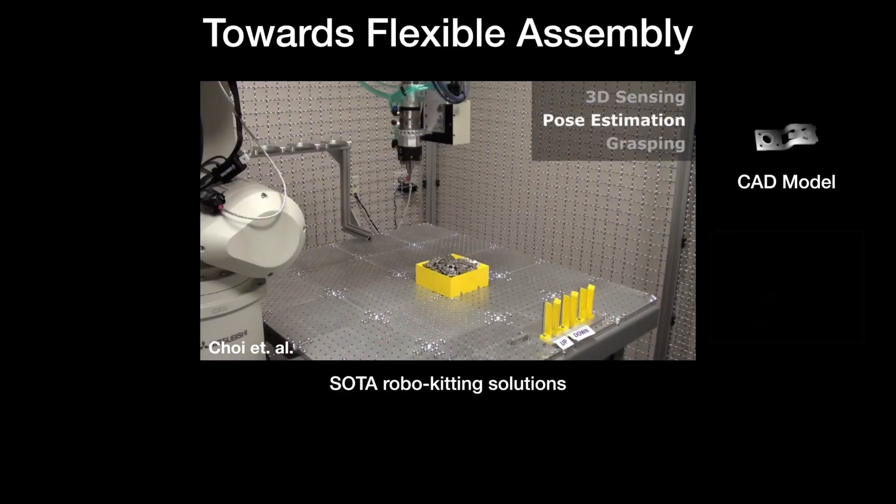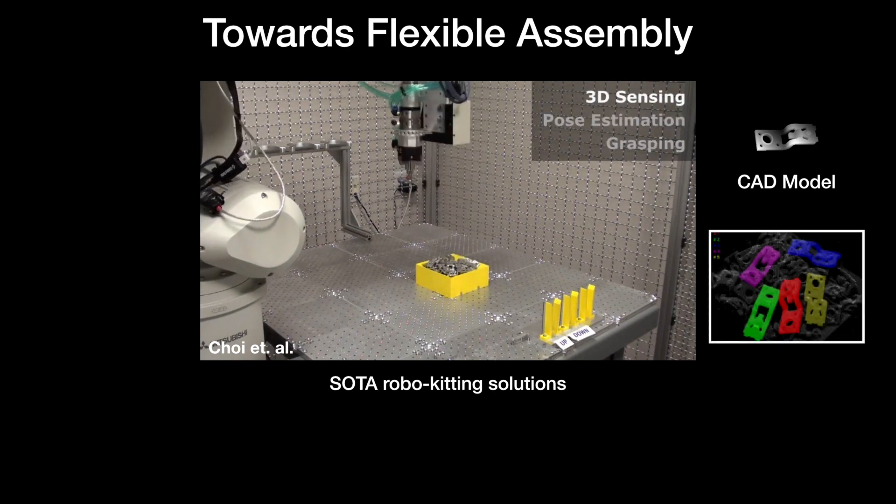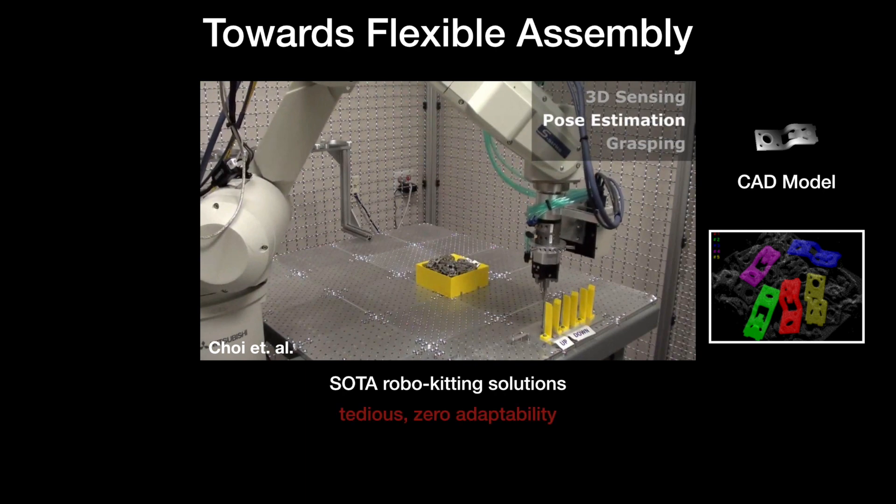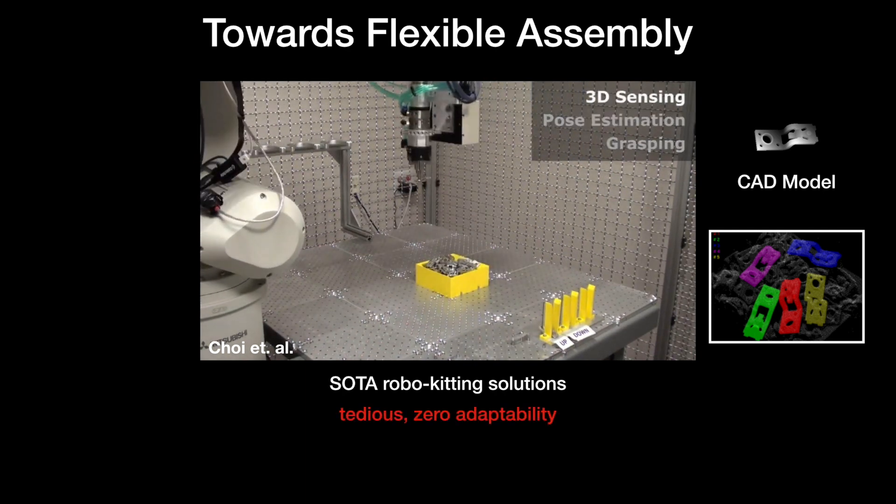State-of-the-art robotic kitting solutions require lots of prior knowledge like 3D models and hard-coded rules. Any parameter change usually involves tedious and time-consuming retuning, which hinders their adaptability to new tasks.